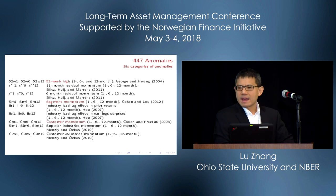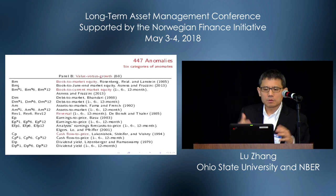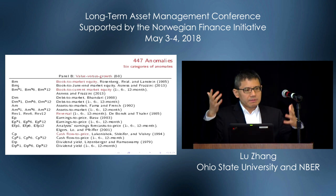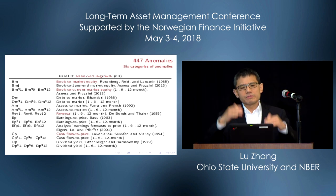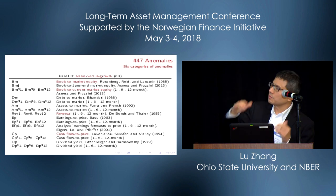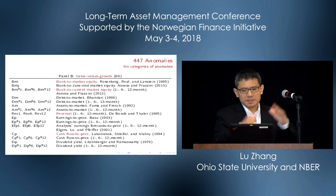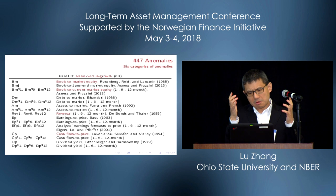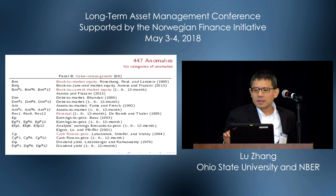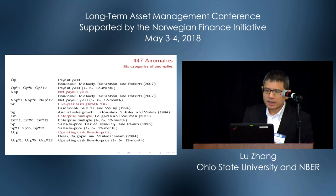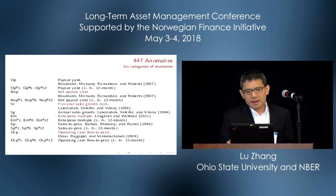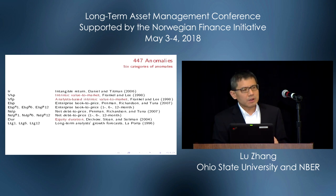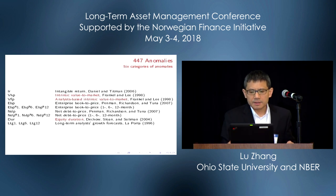The value-versus-growth category has 68 variables, including the classic book-to-market, and we follow AQR's insight of using more updated market information. This includes book-to-current book equity, and many monthly-sorted value-minus-growth variables based on quarterly accounting data. We also include net payout yield, five-year sales growth from Lakonishok, Shleifer, and Vishny, enterprise multiple, operating cash flow, intrinsic value to market in different versions, and equity duration.